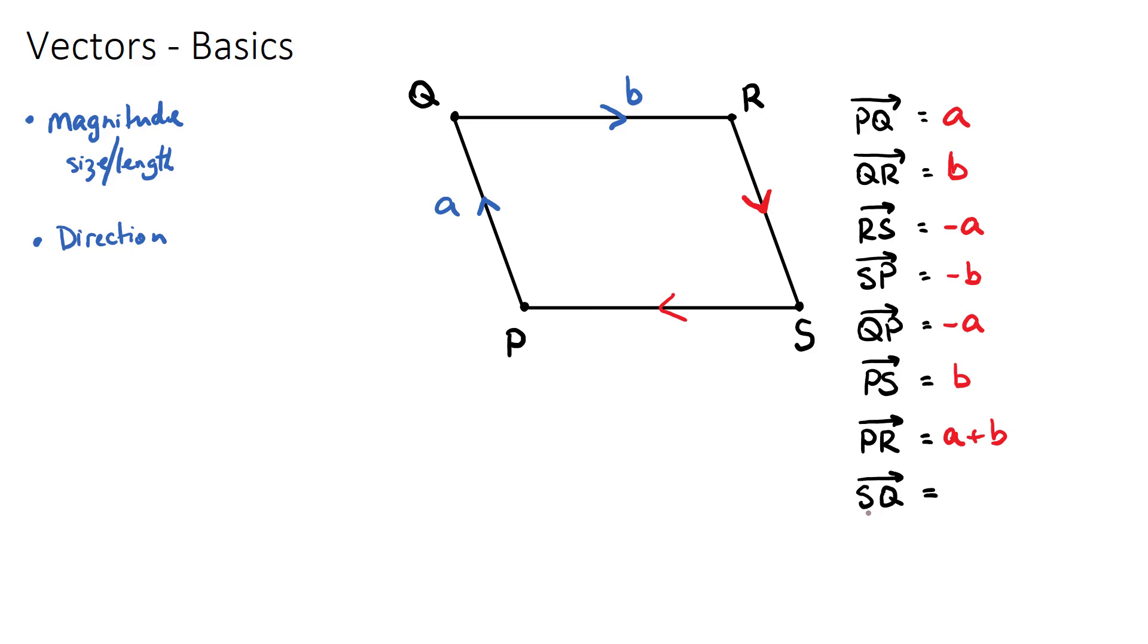And the last one, if we want to go from s to q, we want to go from here to here, we're going to need to go from s to p and then p to q. You might be thinking, could we have gone from s to r and r to q? And yes, you would be correct, but we'll get the same answer depending on which way we go.